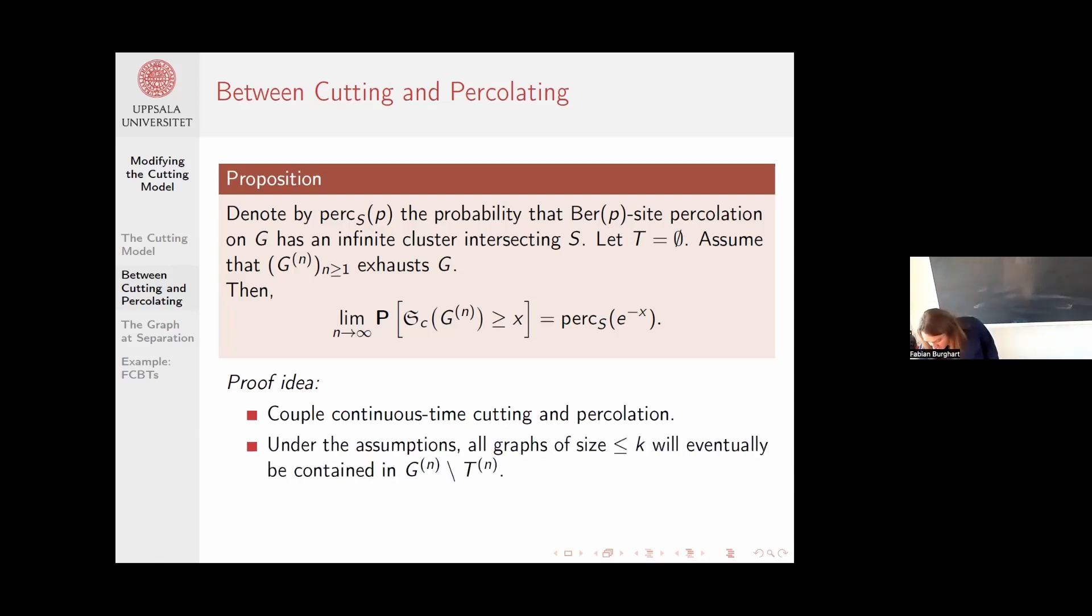The idea is to simply couple the two processes. Then you use the following two things. First of all, small graphs will eventually be contained in the finite graphs that grow outwards. Second, any infinite cluster in percolation corresponds to a finite thing that's not being separated.